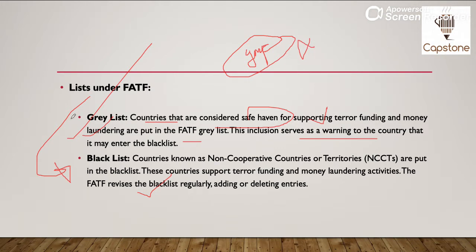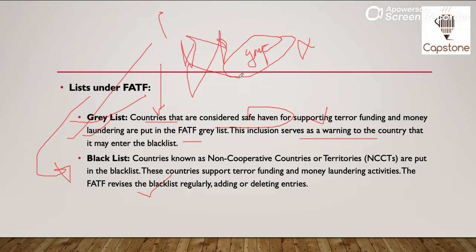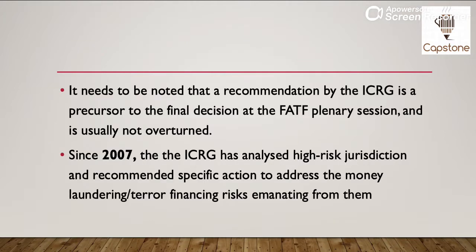Yahan pe haame jo dekhni hai woh news hai ki abhi bhi Pakistan ko, jo ICRG — jo review group hai — usne recommend kiya hai FATF ko grey list mein rakhne ke liye. Aur agar ye grey list mein rahega, toh ye ek warning sign hoga. Aur agar grey list se black list aa jata hai, toh Pakistan pe impact ye hoga ki unko jo bhi finances milte hain IMF se ya World Bank se, woh financial security unki khatam ho jayegi, aur unke upar ek bahut bada financial burden create ho jayega. Ab yehi likha gaya hai ki it needs to be noted that a recommendation jo ICRG ne kiya hai, woh FATF ke plenary session ka jo final decision hota hai uske liye bahut zyada zaroori hota hai, kyunki generally aisa nahi hota ki is recommendation ko mana kar diya jaye.